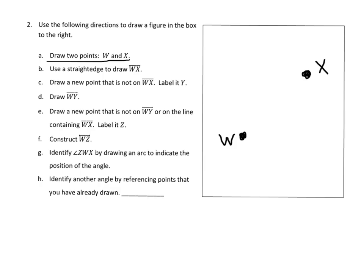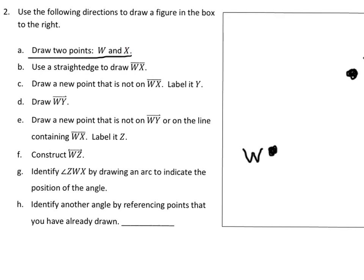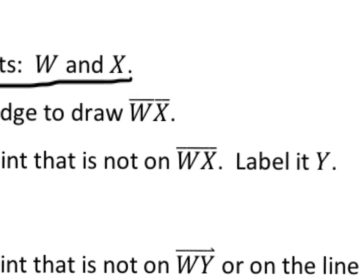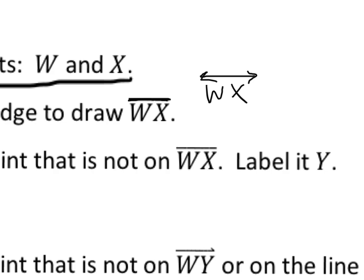Then it says use a straight edge to draw WX. Now the thing I want you to notice is the difference in notation. This line with no arrows is just a straight line — that's a line segment, and it stops, so it makes it a segment. These little arrows mean it goes forever, so that's called a line. This is a line, and this is a line segment.